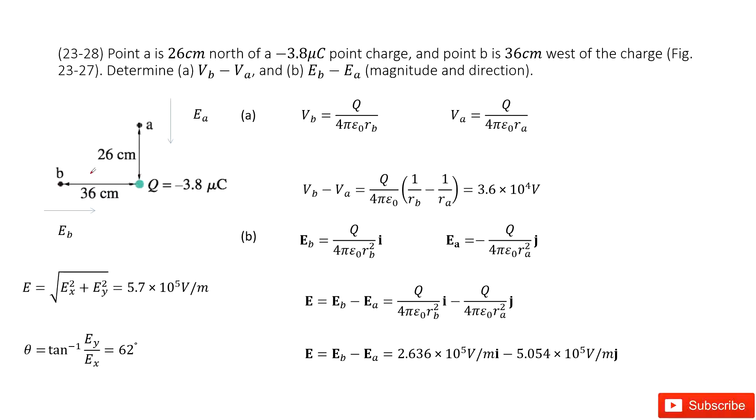First, we look at this point charge. The potential for a point charge is given in our textbook. You just use the charge over 4π epsilon naught times the distance. If this is position B, then VB equals this function, and VA equals this function.